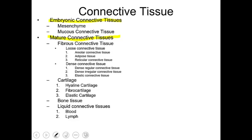First, we'll talk about embryonic connective tissues. When we go to mature connective tissues, we'll talk about fibrous connective tissue, which provides elasticity, stretching, contraction, and support to various internal and visceral organs, followed by cartilage, bone, and liquid connective tissues.